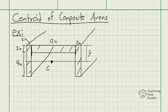The problem statement is to locate the centroid Y-bar of the channel's cross-sectional area. We can see that the centroid is located somewhere along point C — this is the centroid. One thing to keep in mind is that the centroid of an area does not have to be within the object itself. So we're supposed to solve for this Y-bar here.